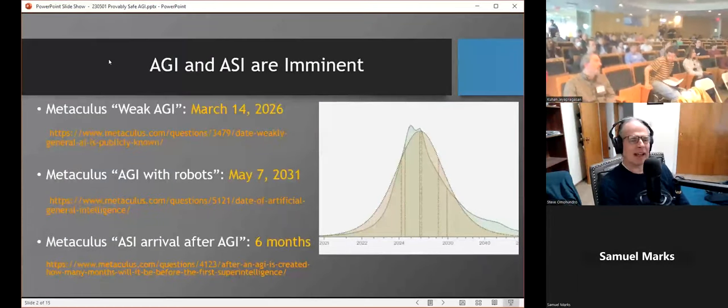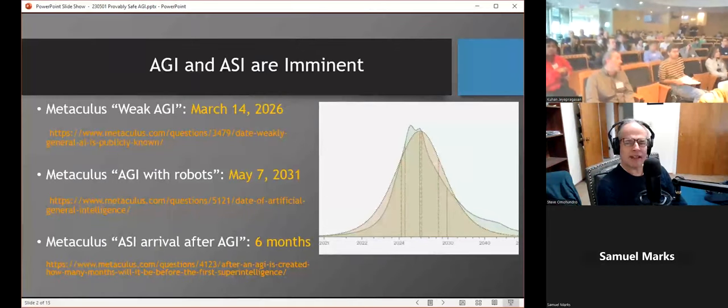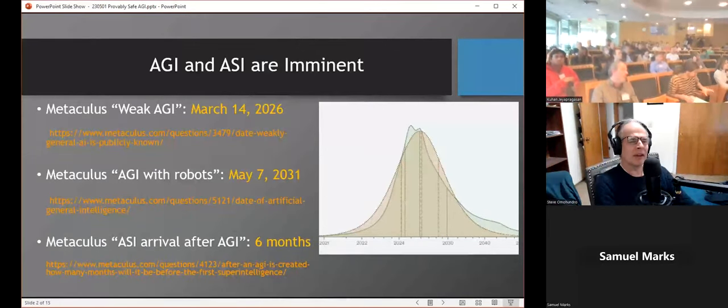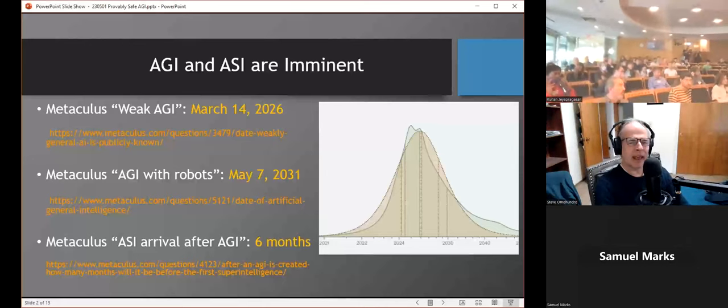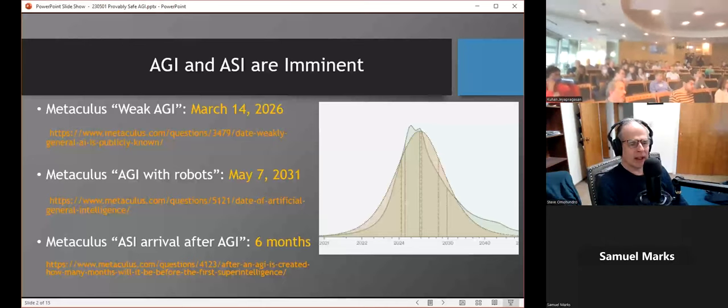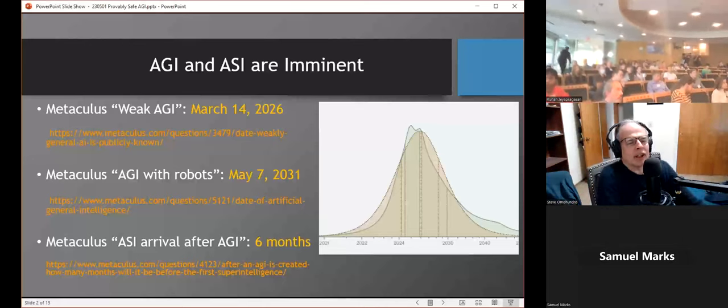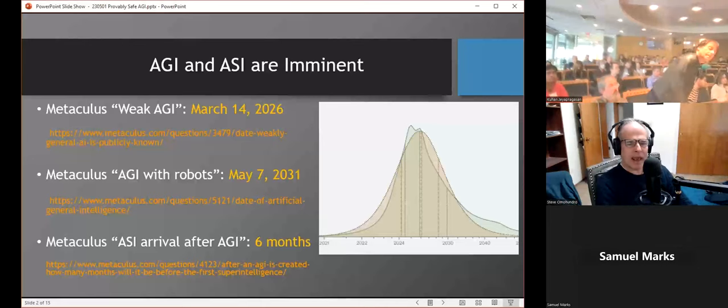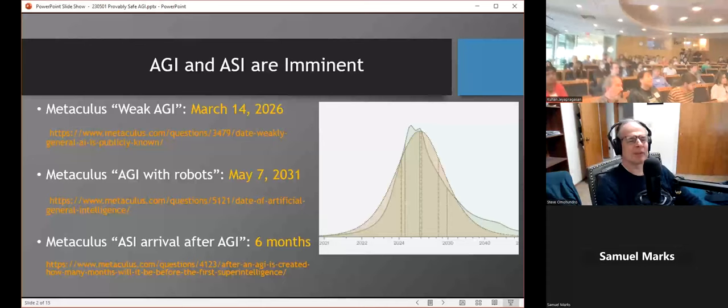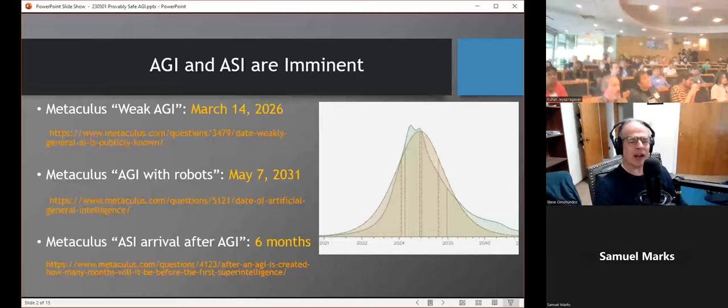There's a lot of interest right now in safety because it appears that AGI and ASI are imminent. The prediction market Metaculus aggregates people's opinions and they currently believe that a weak AGI, which can do anything a remote human worker can do, is due around 2026. A stronger one based on robotics is due in 2031, and once AGI shows up, artificial superintelligence, which is better than humans at pretty much everything, people are estimating six months to that. So we're talking very near term, probably next decade or so.